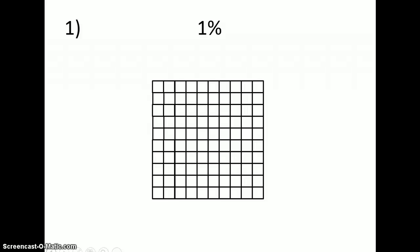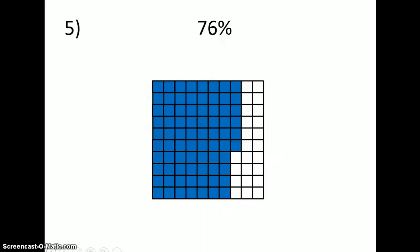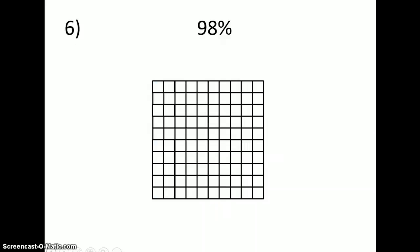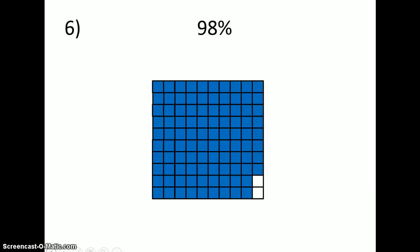If I have a ten-by-ten grid, one percent would be one out of the hundred squares shaded in. If I wanted to shade in ten percent, I would shade in ten out of a hundred squares, because it is ten per one hundred. Fifteen percent would be fifteen squares shaded in out of a hundred. Thirty percent would be thirty squares shaded in out of one hundred. Seventy-six percent would be seventy-six out of one hundred squares shaded in. Ninety-eight percent would be ninety-eight out of one hundred squares shaded in.